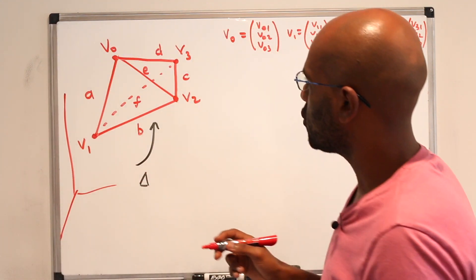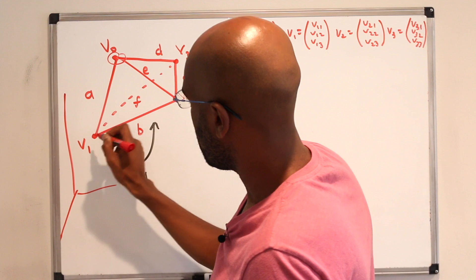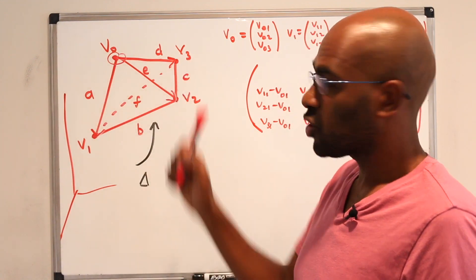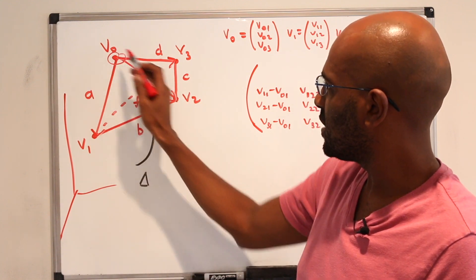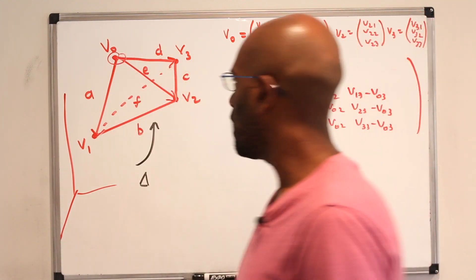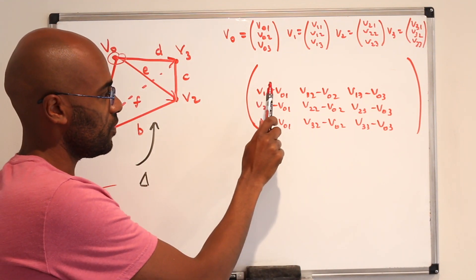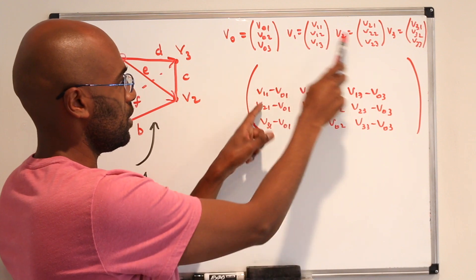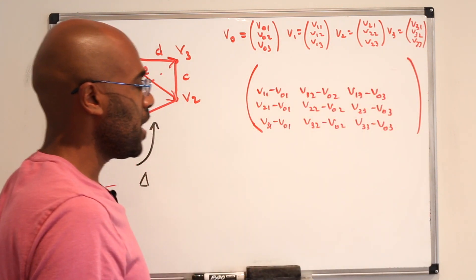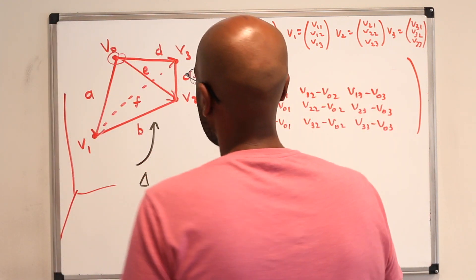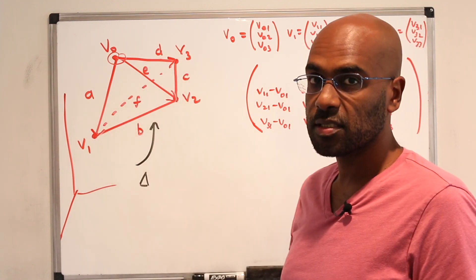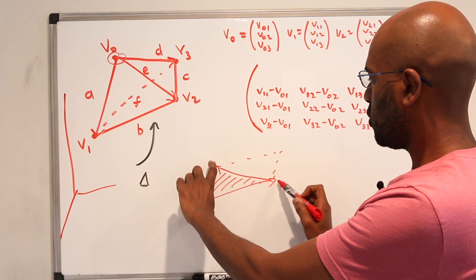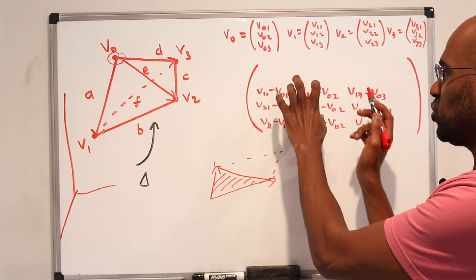If we take vectors emanating from one vertex, say v₀, we get vectors v₁−v₀, v₂−v₀, and v₃−v₀. The determinant of the matrix formed by these vectors gives the volume of the parallelepiped spanned by them. Just as in two dimensions, where the area of a parallelogram is the determinant of a 2×2 matrix of two spanning vectors.